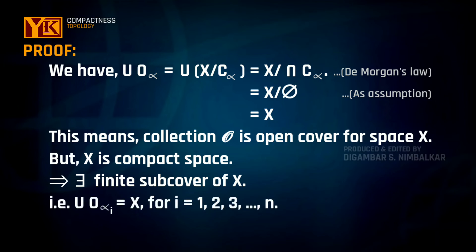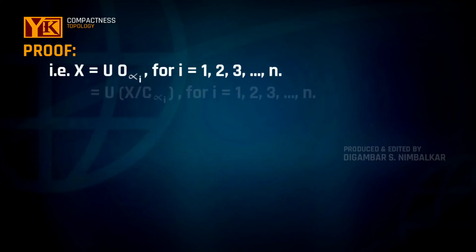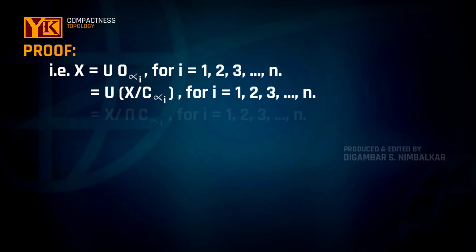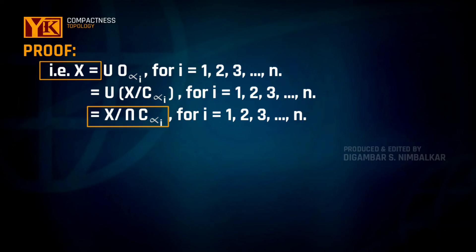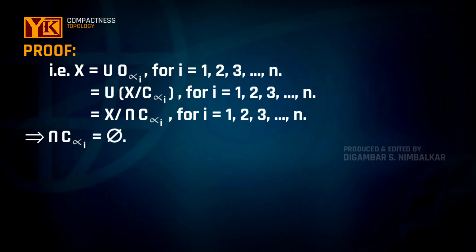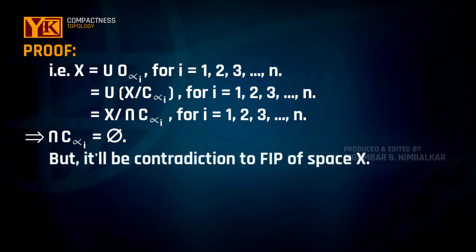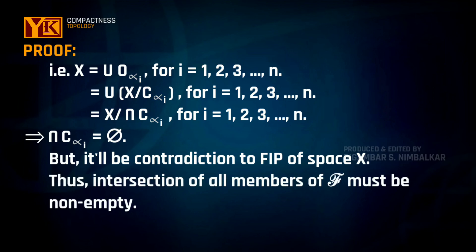Since X is compact, we must have a finite sub-cover — that is, the union of finitely many open sets in O equals X. So X equals the union of O-alpha-i for i from 1 to n, which equals the union of (X minus C-alpha-i), which equals X minus the intersection of C-alpha-i for i from 1 to n. This means the intersection of C-alpha-i must be empty. But this contradicts the fact that F has the finite intersection property. Thus, if F has the finite intersection property, then the intersection of all members of F must be non-empty.